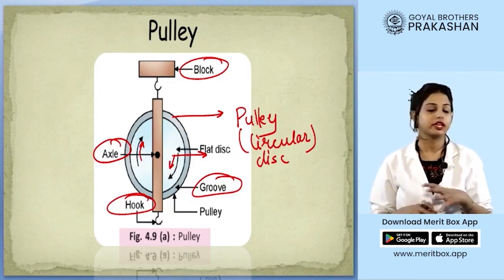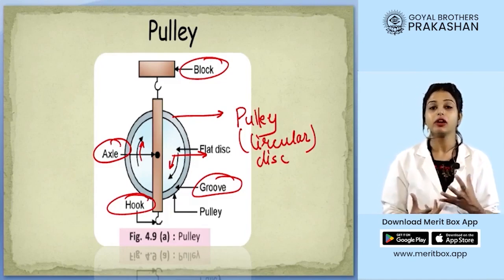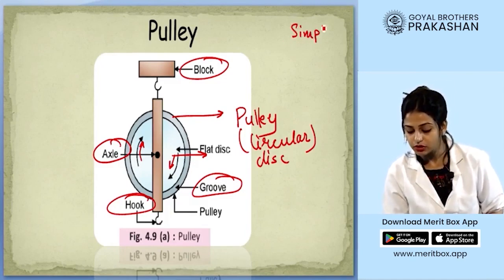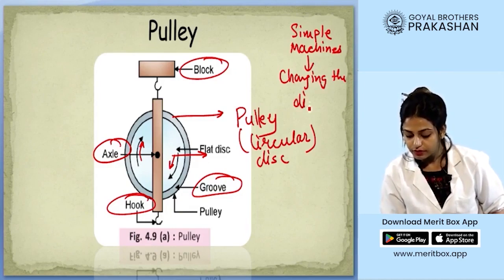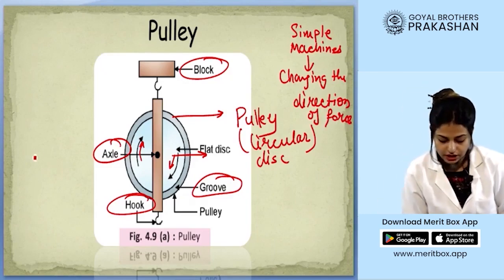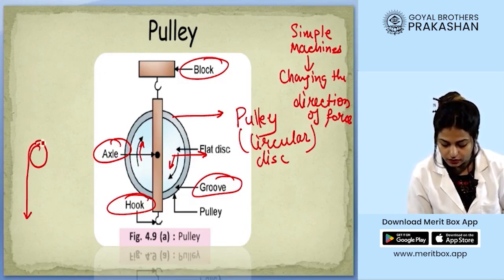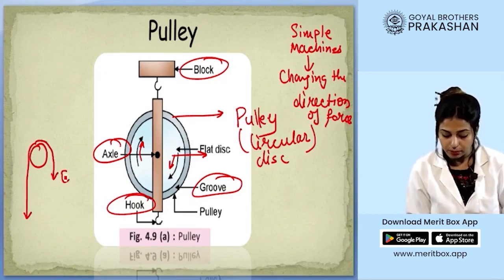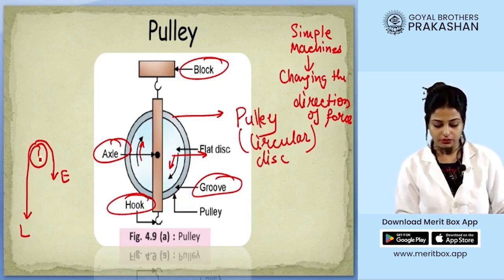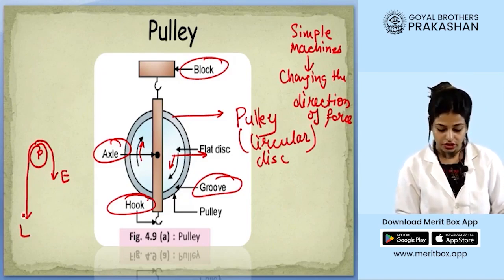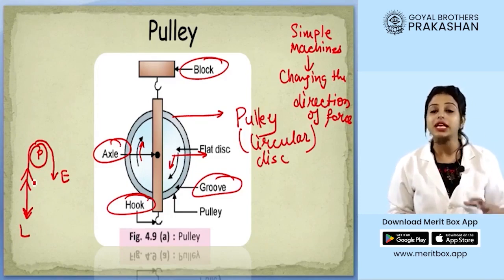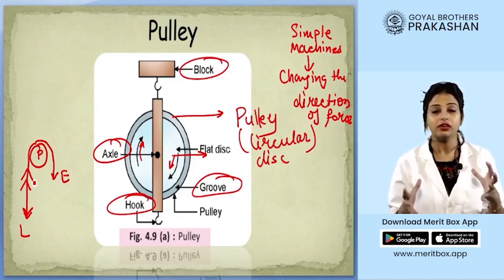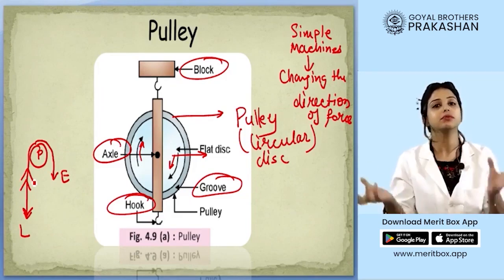There are various combinations in which pulleys are used. Simple machines are those that help by changing the direction of force. If a pulley is fixed and a rope passes over the groove, the effort applied in the downward direction causes the load to move upward — the direction of force is changed using the pulley. We can also use combinations of pulleys to lift very heavy loads.